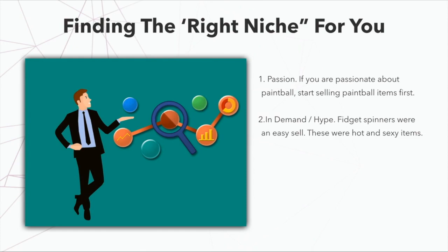Think about fidget spinners — they were an absolutely easy sell, hot and sexy items that everybody wanted. They were a craze. The same goes for crazy bones and different toys that become crazes. Typically 98% of the time, toys are the crazes because children dictate them. Kids in schools want to show each other the coolest new product, they go to their parents, and the parents don't want their kids to feel left out. So you can really make a lot of money if you position this correctly.